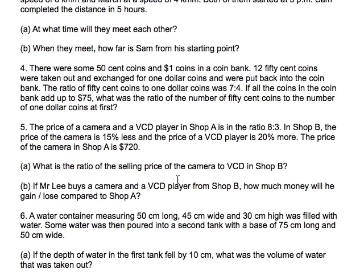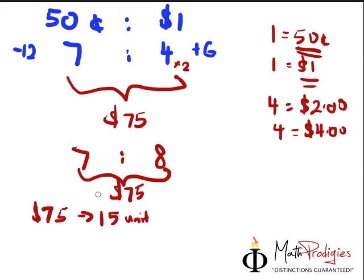But what's the question asking for? The question is asking for the ratio of the number of 50 cent coins to the number of 1 dollar coins at first. So we find out what 7 units first. 7 units will give us the number of 50 cent coins. And in this case, it's 75 divided by 15 to find out 1 unit, and then we times 7. So 75 divided by 15 will give you 5, times 7 gives you 42.